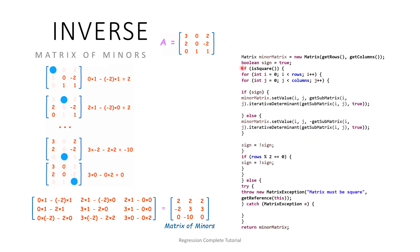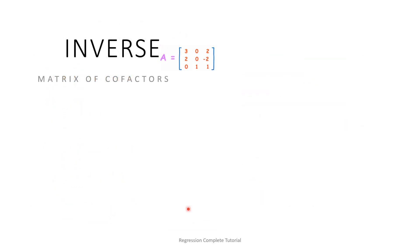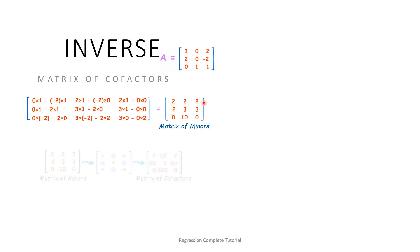In the code, we first check if the matrix is square — if not, we throw an exception. Then we iterate through all rows and columns, computing the determinant of each submatrix and storing it. We then alternate the sign of each value to produce the matrix of cofactors. The cofactor matrix is obtained from the matrix of minors by alternating the signs of each element.